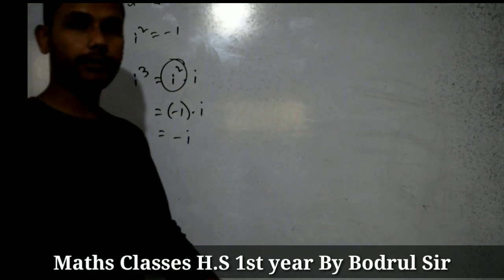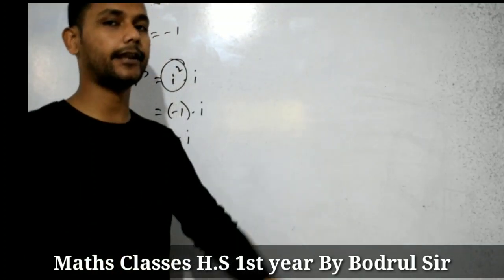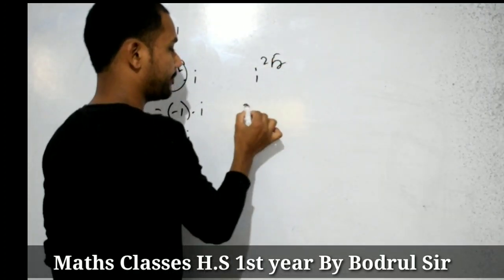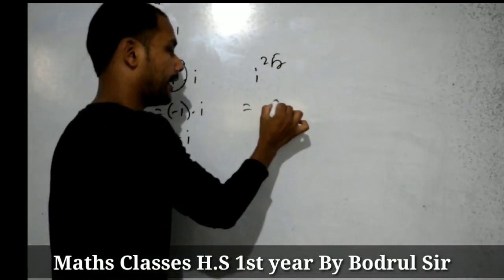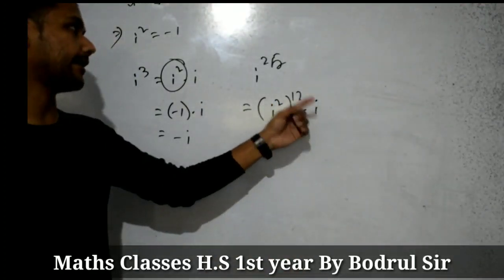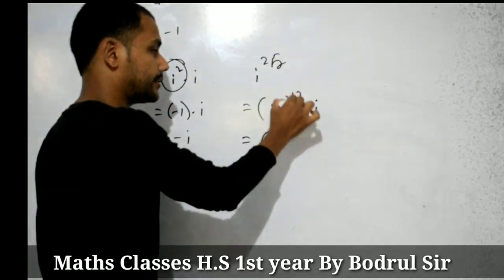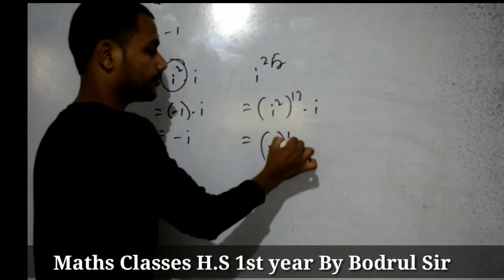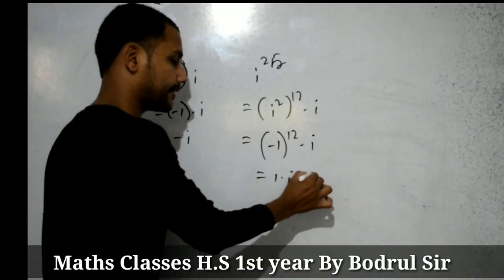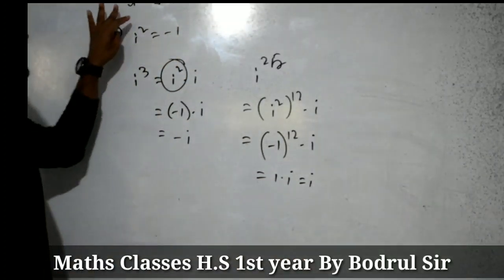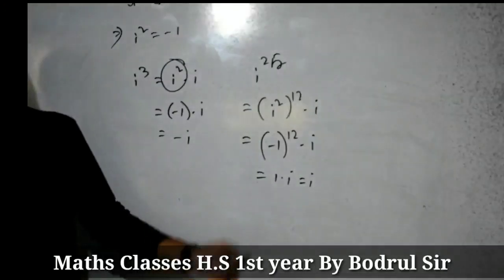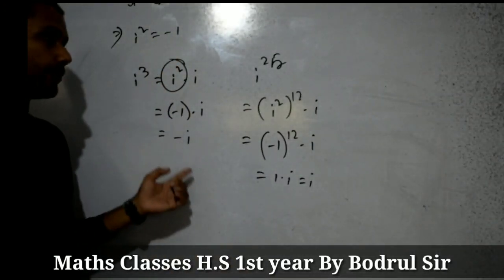So same way, students, you can find i to the power of any real number. For example, i to the power 25 can be written as i squared to the power 12 into i, since 2 times 12 equals 24 and adding another i gives 25. Now i squared equals minus 1, so this is minus 1 to the power 12 into i. Since minus 1 to the power 12 equals 1, we get 1 into i, that is i.